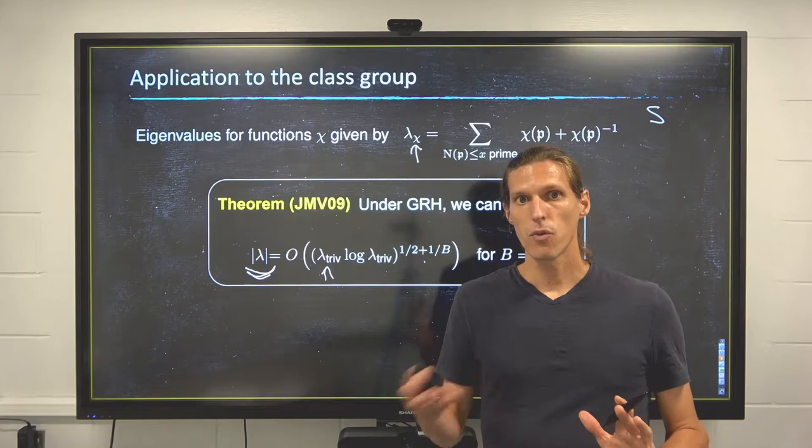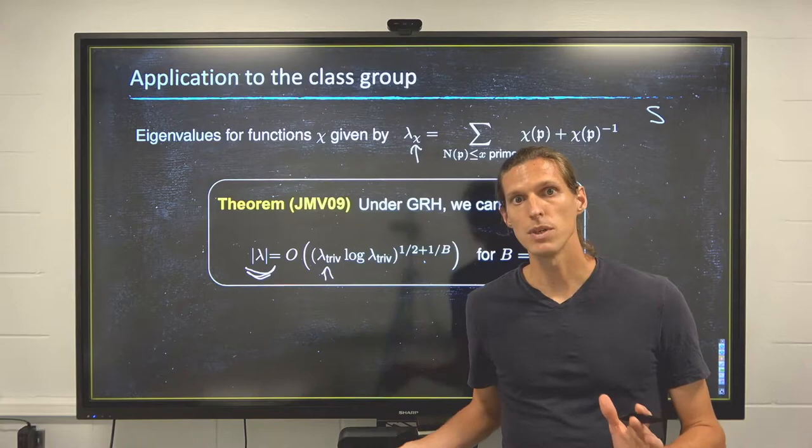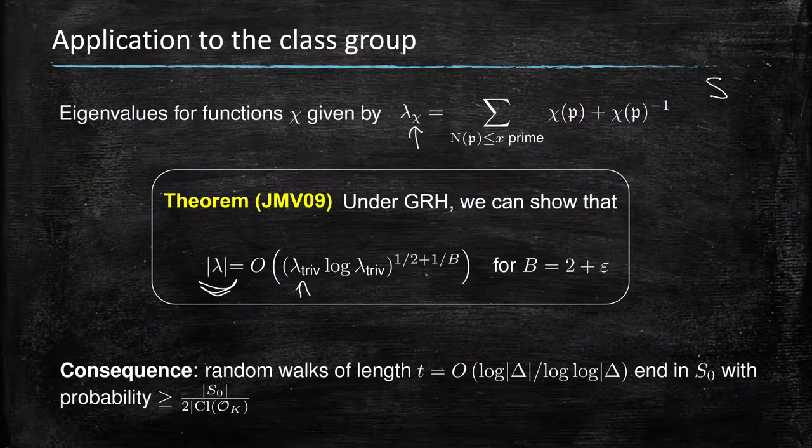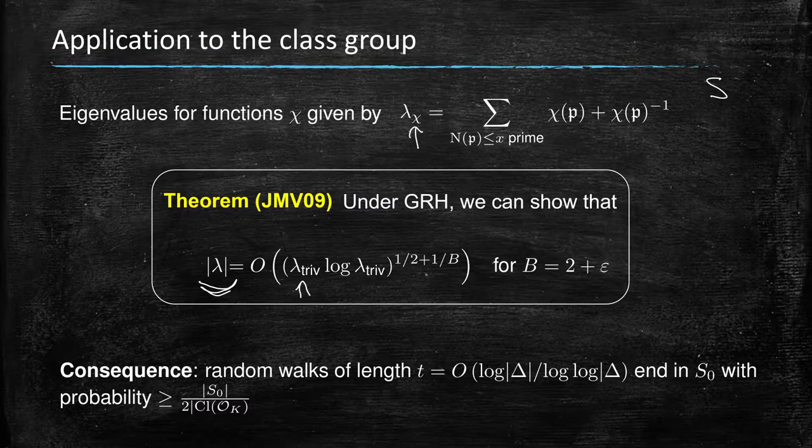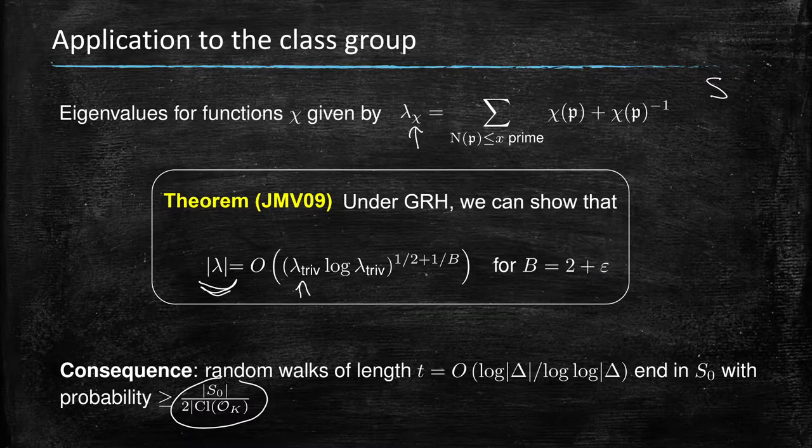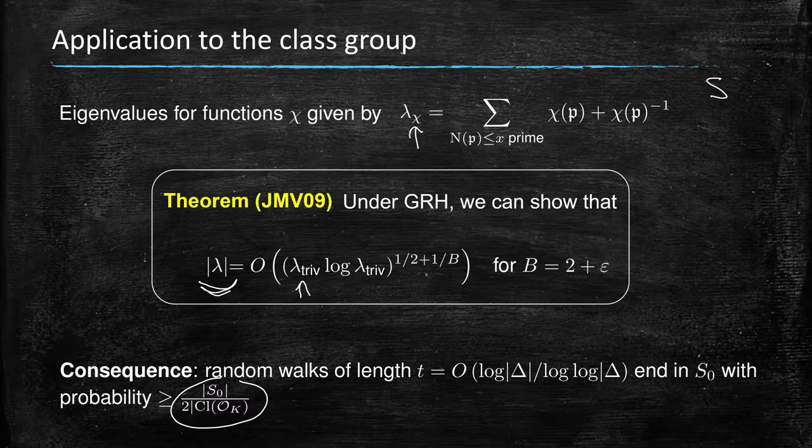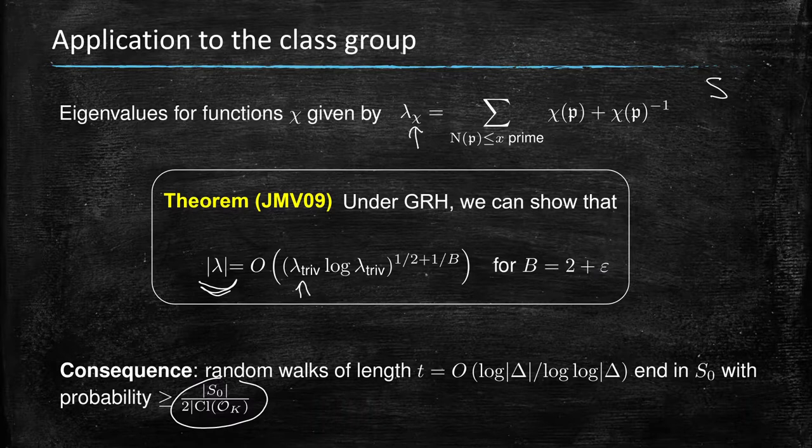The non-trivial eigenvalues are at most essentially a square root of the trivial one. That will make that quotient large enough for these random walks to be short enough and still guarantee good mixing properties. What it means is when our random walk has length on the order of log delta over log log delta, then we end in any s0 with probability at least half of the uniform probability. That is really what we wanted, and those walks are of moderate size, allowing some computational problems to be solved efficiently.